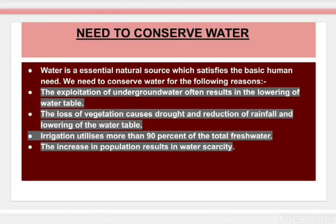Next, let's learn the need to conserve water. Why do we need to conserve our water resources? There are some reasons. First, the exploitation of underground water often results in the lowering of the water table. The loss of vegetation causes drought and reduction of rainfall, lowering the water table further. Irrigation utilizes more than 90% of the total fresh water, and the increase in population results in scarcity.